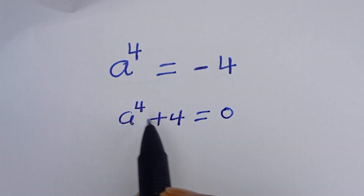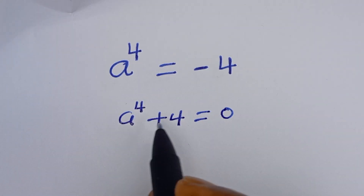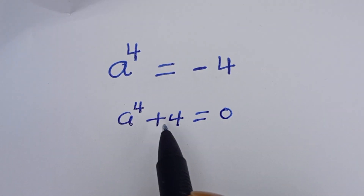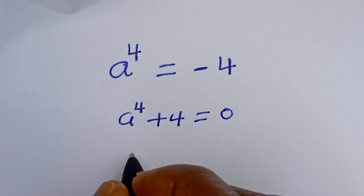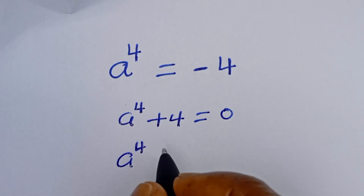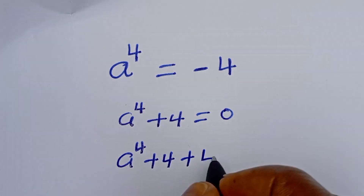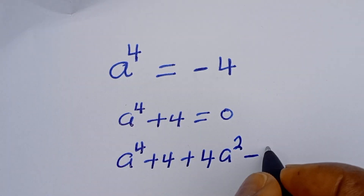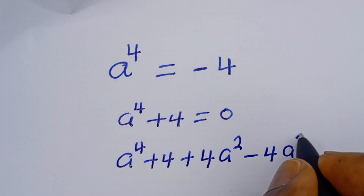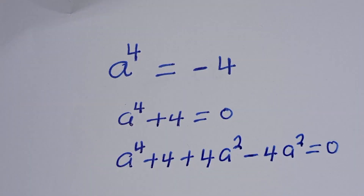Now, if you look at this, we can add and subtract 4a squared. Adding and subtracting 4a squared does not formally change the equation. So we have a to the power of 4, plus 4, plus 4a squared, minus 4a squared, is equal to 0.